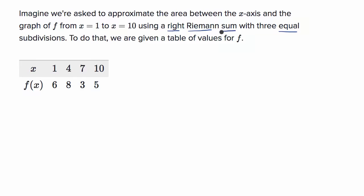So now let's try to do that together. This is interesting because we don't have a graph of the entire function, but we just have the value of the function at certain points. As we'll see, this is all we need in order to get an approximation for the area, using a right Riemann sum.